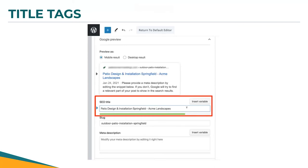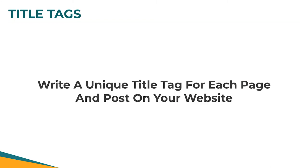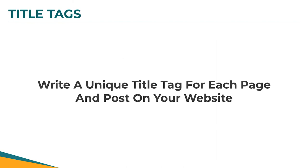Most website editors — WordPress, Wix, Squarespace — all have a spot for this usually called the 'SEO title.' You can also usually change your slug there too, which is your URL. And there's your meta description below it — what shows up beneath your title tag — and I recommend writing something unique for that as well.